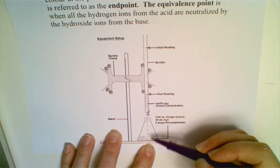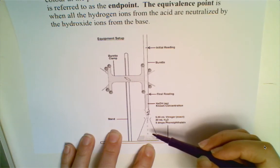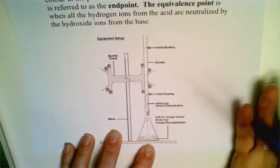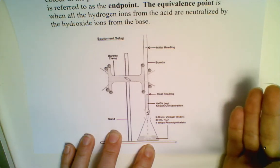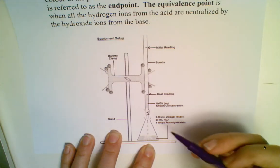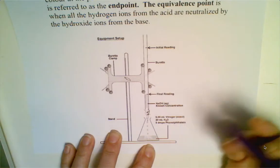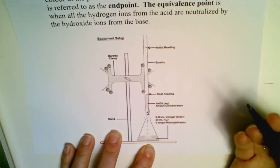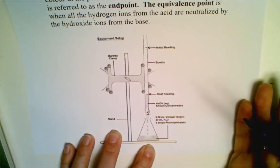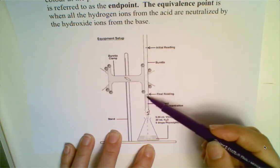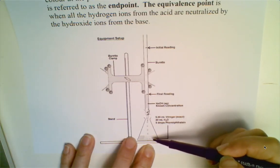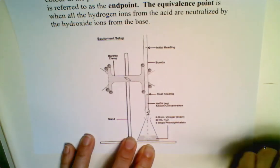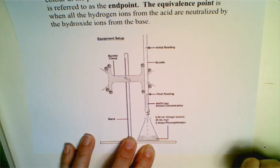There's always some error associated with the endpoint — when you think it turns a faint pink color versus somebody else, there is a little bit of variation. But ideally we would like the endpoint to match our equivalence point. When an acid neutralizes all of that base, we say that the moles of acid equal the moles of base at that particular point.